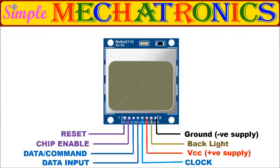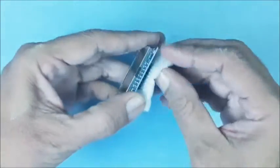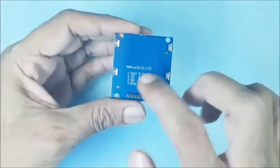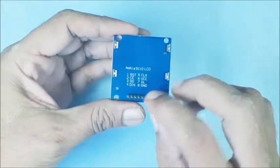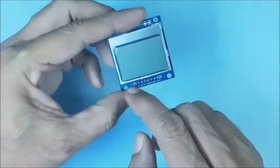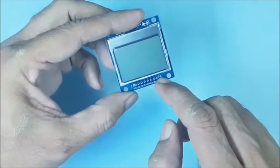These are the pinouts: 2 for power supply, 1 for data input, 1 for clock input, 3 for control, and 1 for backlight. The pinouts are marked on the back side of the Nokia 5110. Similarly, the pinouts in short are marked on the front side of the Nokia 5110.